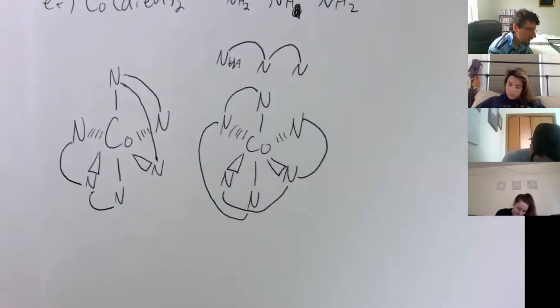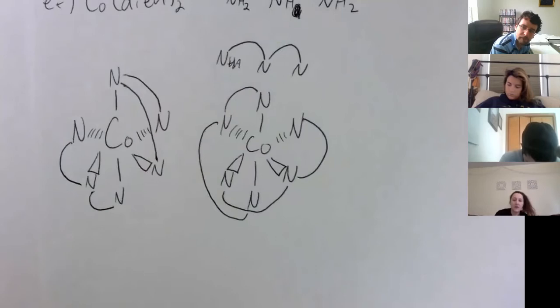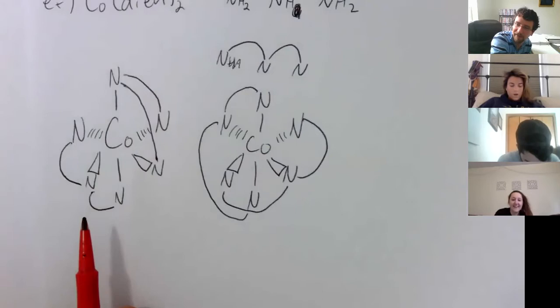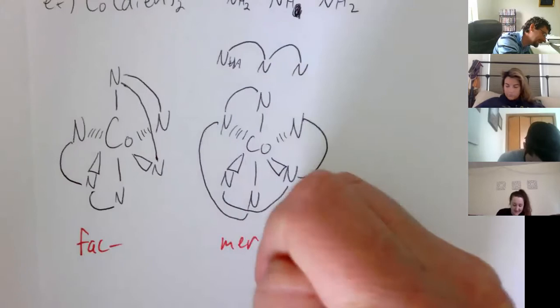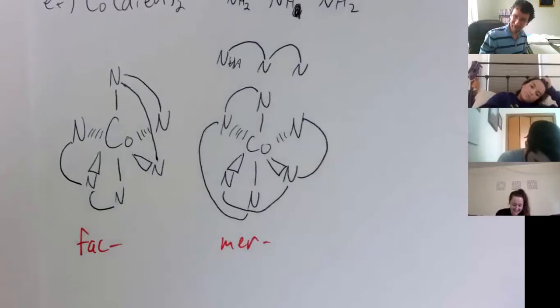We can see that the way they're bound is different. Anyone have an idea of which one is the fac and which is the mer? The left one is the fac — let's see that triangle. Yes, that one's the fac, and that other one's the mer. When the class votes correctly, I always act like you might be wrong — I just want to see if you feel like you know it. Build up those confidence levels.